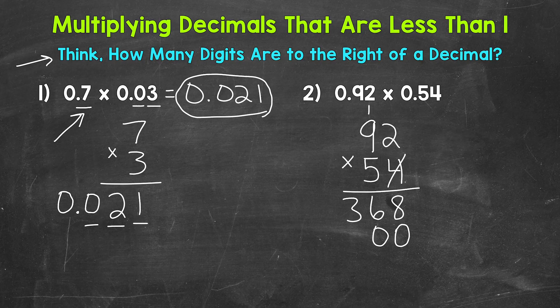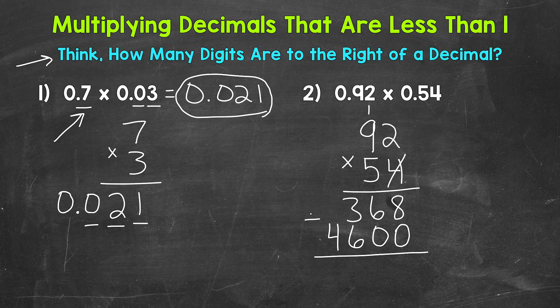And now we have 5 times 9, which is 45, plus that 1 is 46. Once we get to this point, we can add.